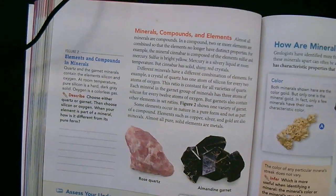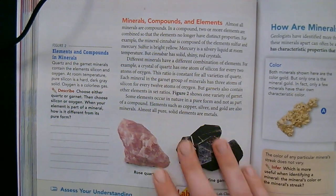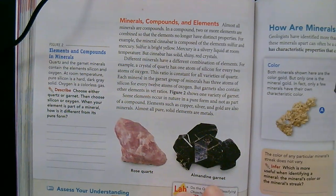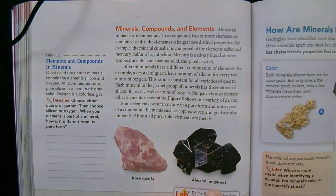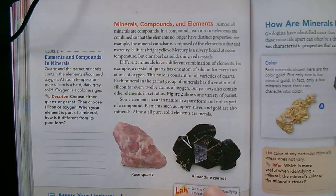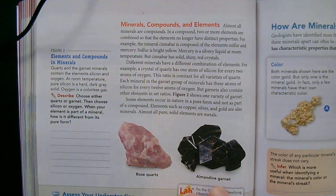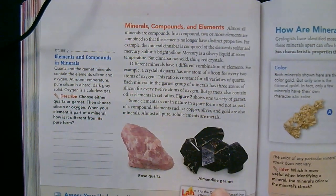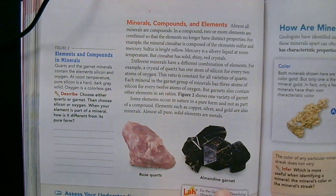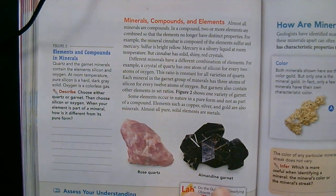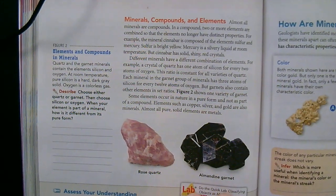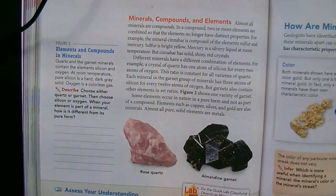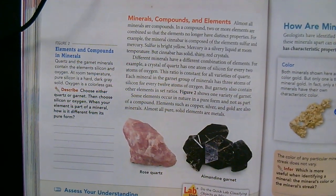Minerals, compounds, and elements. Almost all minerals are compounds. In a compound, two or more elements are combined so that the elements no longer have distinct properties. For example, the mineral cinnabar is composed of the elements sulfur and mercury. Sulfur is bright yellow. Mercury is a silvery liquid at room temperature. But cinnabar has solid, shiny red crystals.